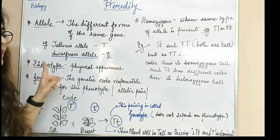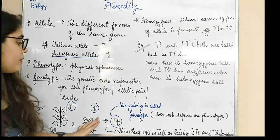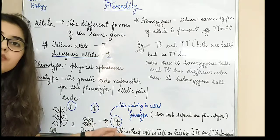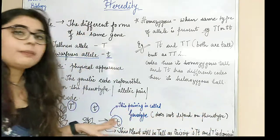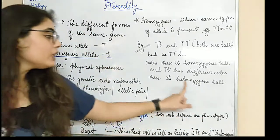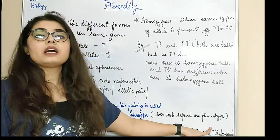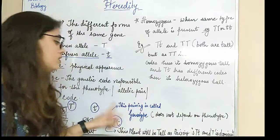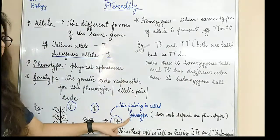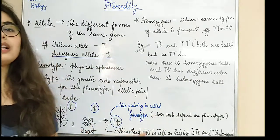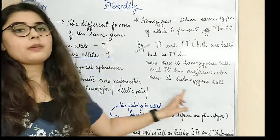So in this also, I am giving you an example of a pea plant. If we are talking about a pea plant — one tall, one dwarf — when their mating happens and zygote formation occurs, that pairing is called as genotype. It is not dependent upon your phenotype. But phenotype — physical appearance — depends on the genotype, which is the genetic ratio or genetic code inside the organism.